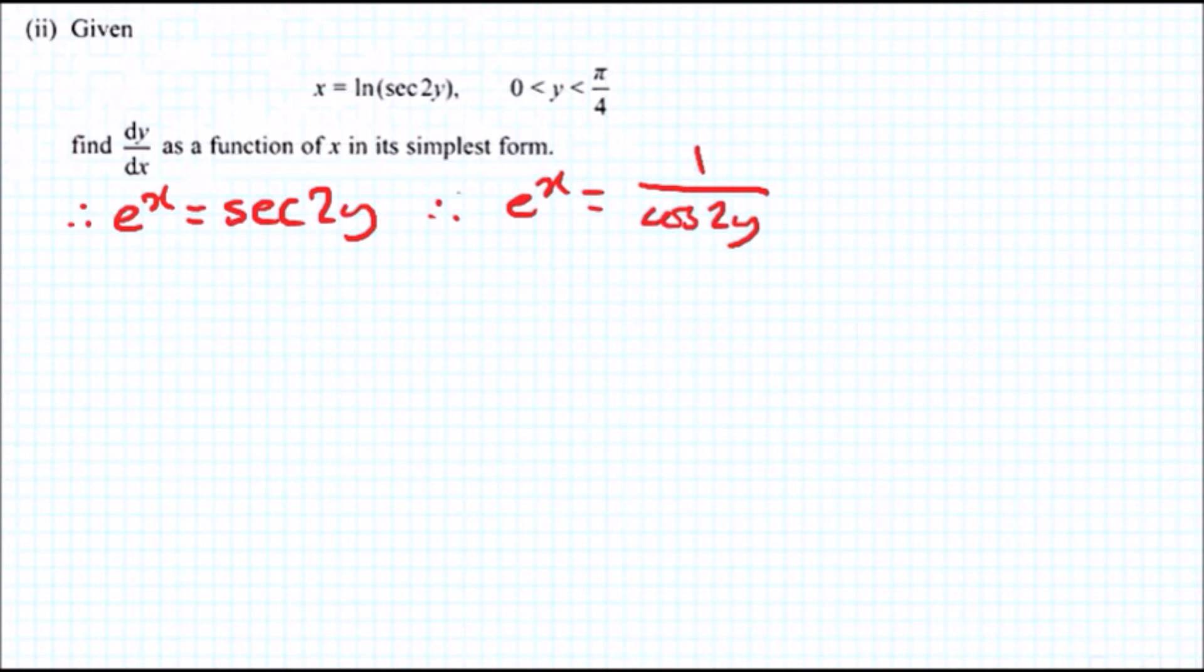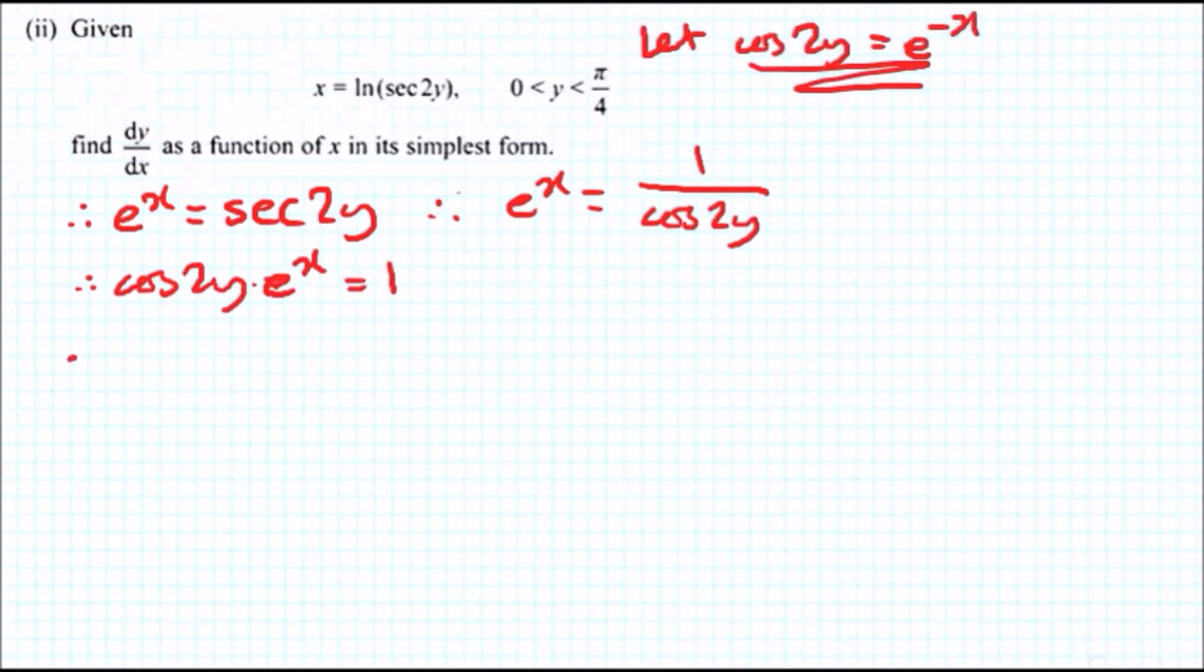Now what we want to do here is multiply cos 2y across and then we're going to get cos 2y e^x equals 1. So using the product rule, the quick way to do it is to differentiate the first term then copy the second plus copy the first term then differentiate the second.